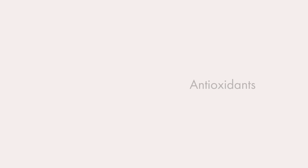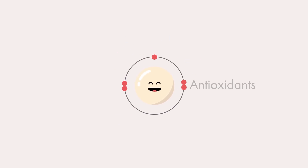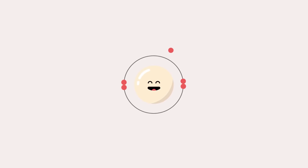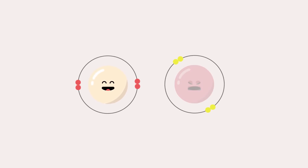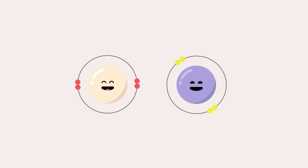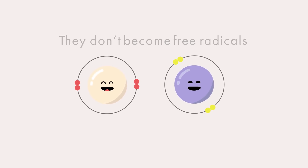So what do you do? How do you get rid of free radicals? That's where antioxidants come in. Antioxidants are super friendly and helpful to your body — they actually donate an electron to those free radicals so they stop wreaking havoc on your body. And the best part is that when they donate that electron, they don't become free radicals themselves.